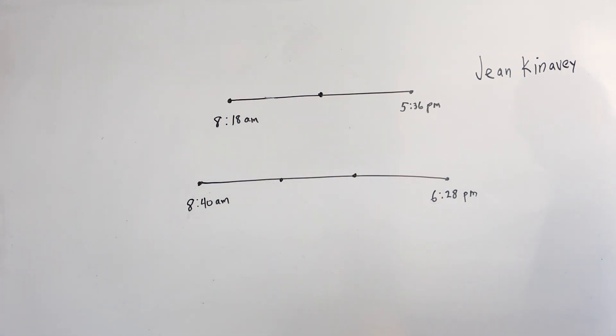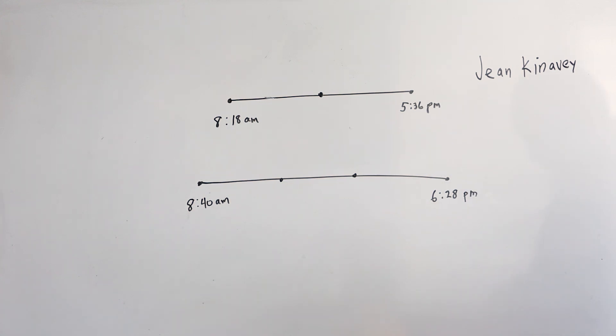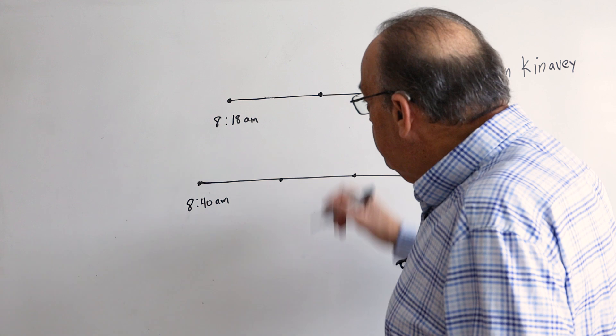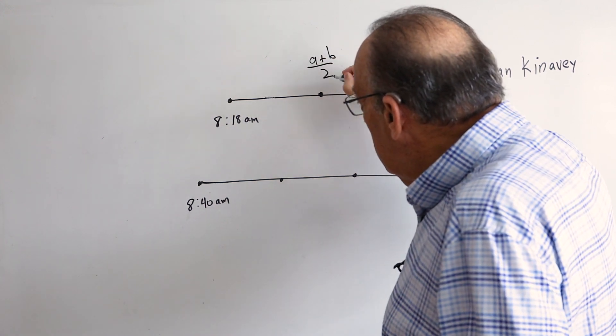We're not going to talk about the complications of changing this to military time and worrying about odds and evens. Instead, we'll just talk about the formula. So I taught the students this formula: a plus b over 2.